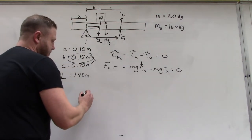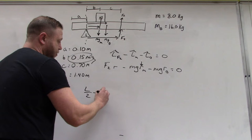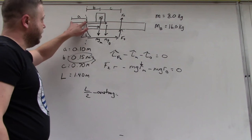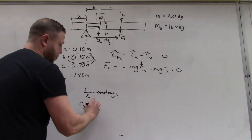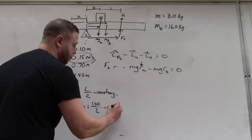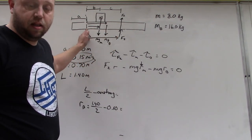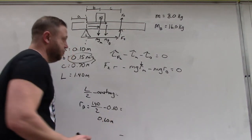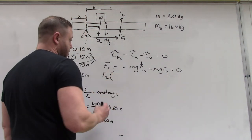I gave you guys this recipe in class: take the length of the beam divided by two and then subtract whatever overhangs from the other side. This is the overhang here at a. Since I know the length of the beam, the radius of the beam is simply 1.4 over two, which is going to give me the distance between the center of mass of the beam and this fulcrum. That gives us 0.6 meters.